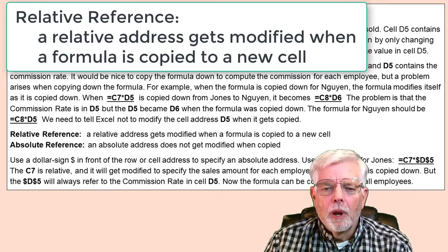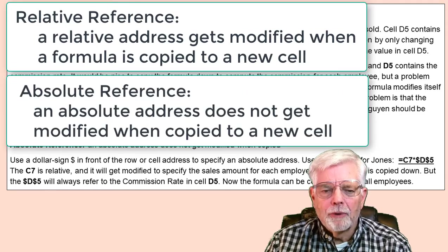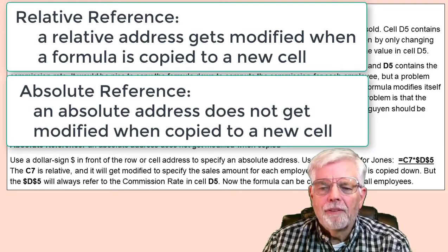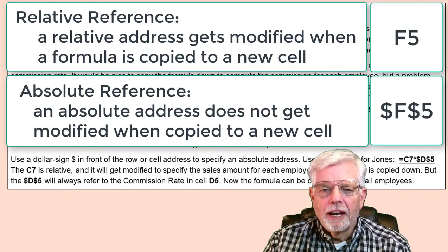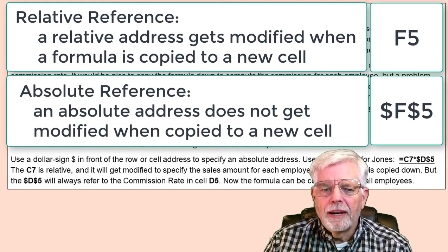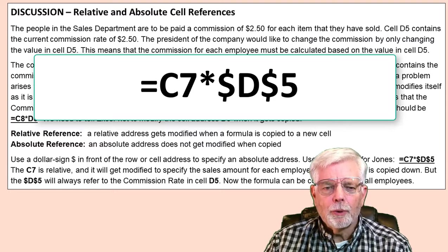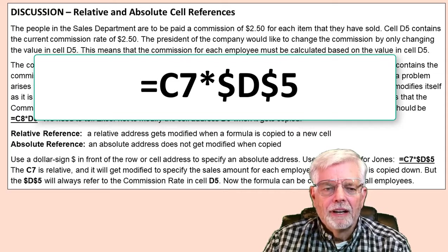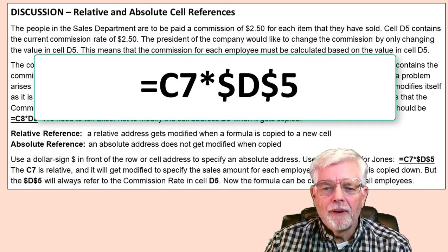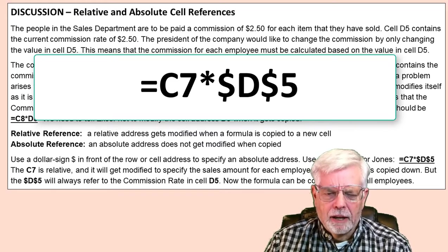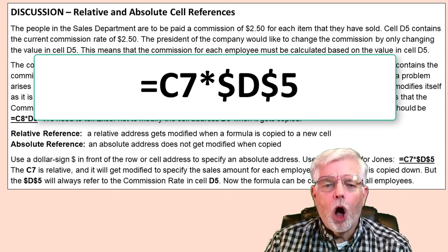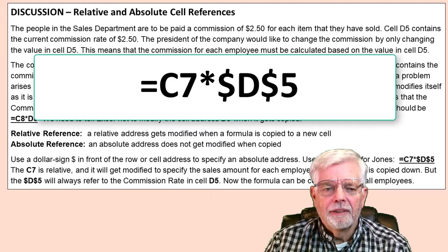Relative Reference: A relative address gets modified when a formula is copied to a new cell. Absolute Reference: An absolute address does not get modified when copied. Use the dollar sign in front of the row or cell address to specify an absolute address. Use this formula for Jones: equal C7 times $F$5. The C7 is relative and it will get modified to specify the cells for each employee as the formula is copied down. But $F$5 will always refer to the commission rate in cell F5. Now the formula can be copied down for all employees.